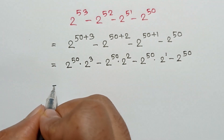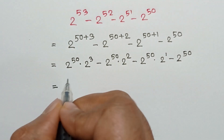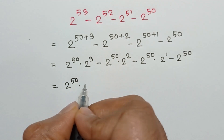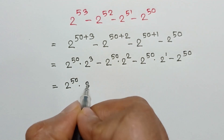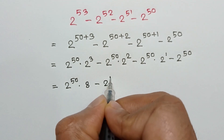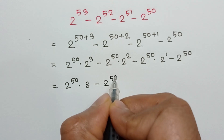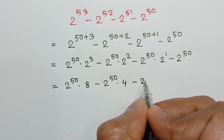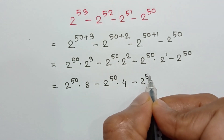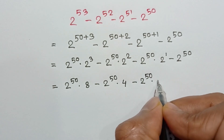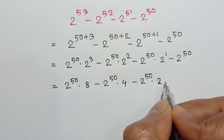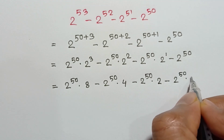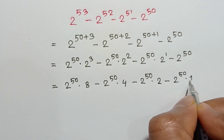So now we get: 2 to the power 50 times 2 to the power 3 is equal to 8, minus 2 to the power 50 times 2 squared is equal to 4, minus 2 to the power 50 times 2 to the power 1 is equal to 2, minus 2 to the power 50 times 1.